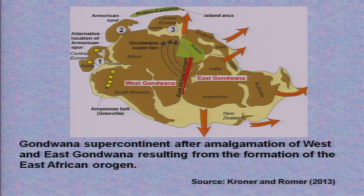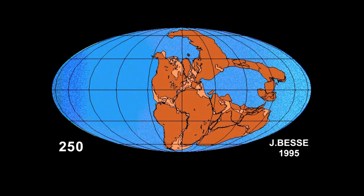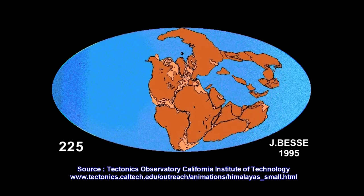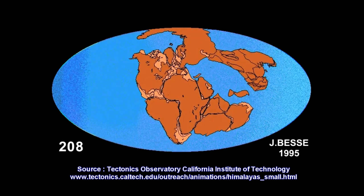You can easily make out Africa, South America as part of Gondwana land, and then in green you have India followed by Australia. The east-west tension is indicated by the red arrows. This is called the east-African orogeny — that is, mountain-building activity. These illustrations show how the continents split.